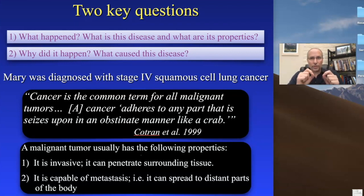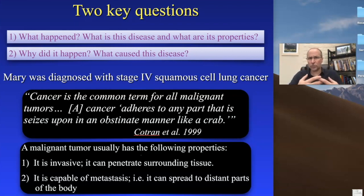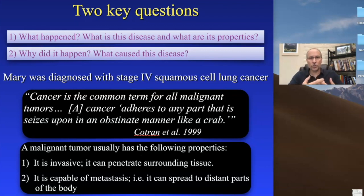We need to deal with this disease. We need to find a way to treat it — to treat individual patients so that we get good outcomes and their quality of life is not damaged or destroyed. The only way we can do this is for science to determine two things: first, in the case of Mary and every other patient, what happened? What is this disease? What's going on with it and what are its properties?